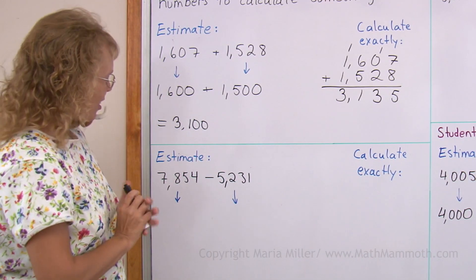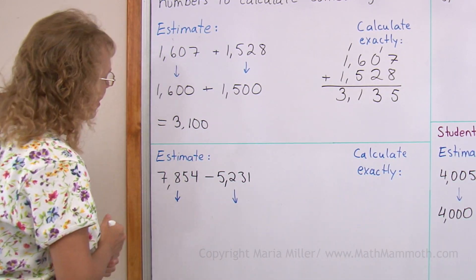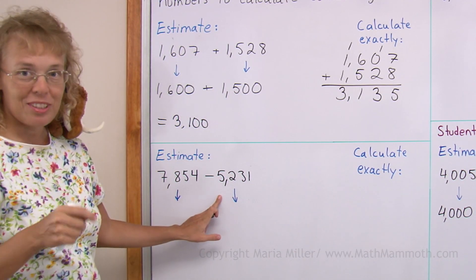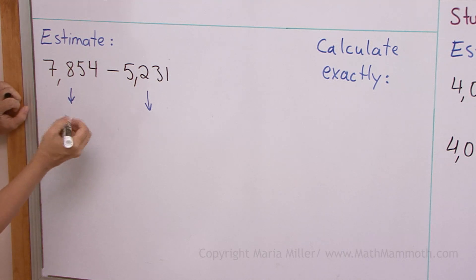Let's try another one, a subtraction. Again, I would do the same thing, just round these numbers to the nearest hundred. This one, 7,000, and there's five tens, so it's rounded up to 7,900.